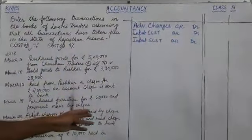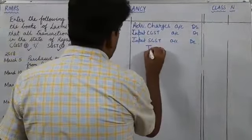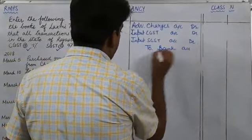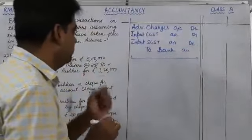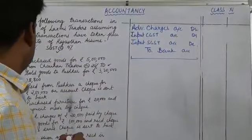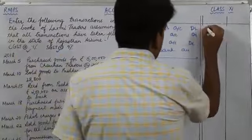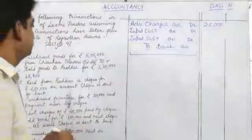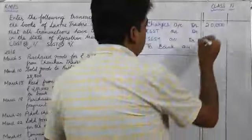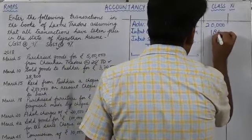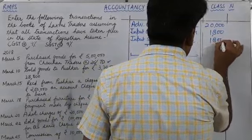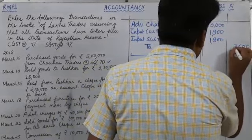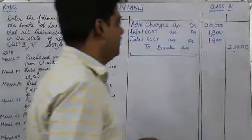This is our payment by cheque, so the giver is bank, so bank account will be credited. Simple narration: advertisement charges paid. Amount of advertisement charges is 20,000, and we will apply 9% CGST as well as 9% SGST, so that will come to 1,800 each. Total amount will be 23,600.